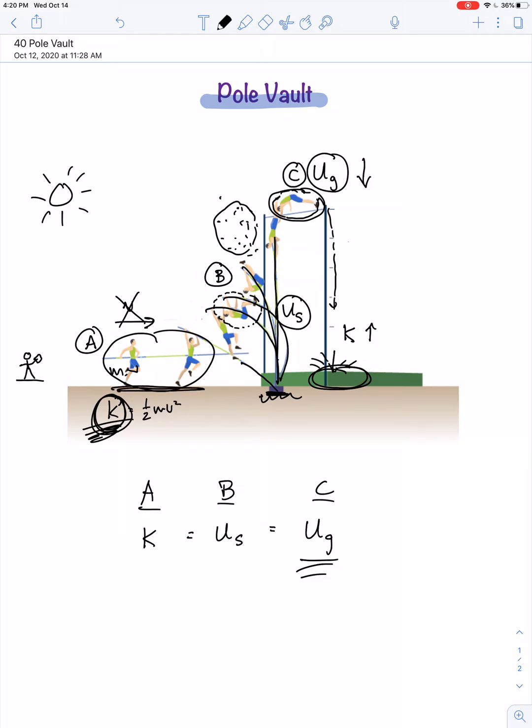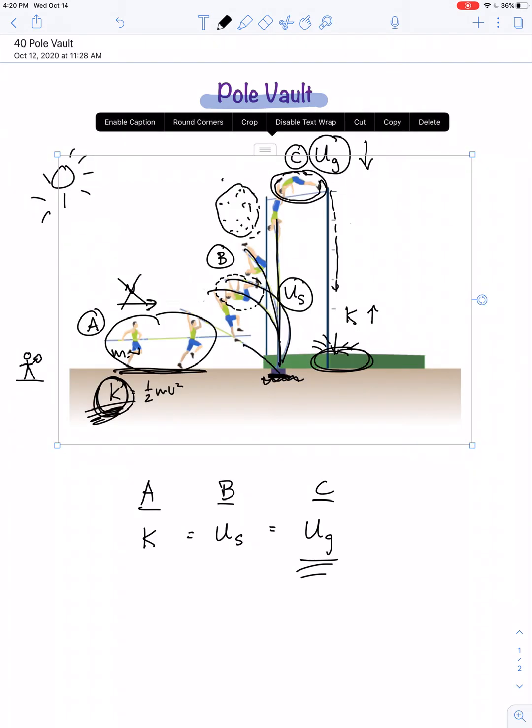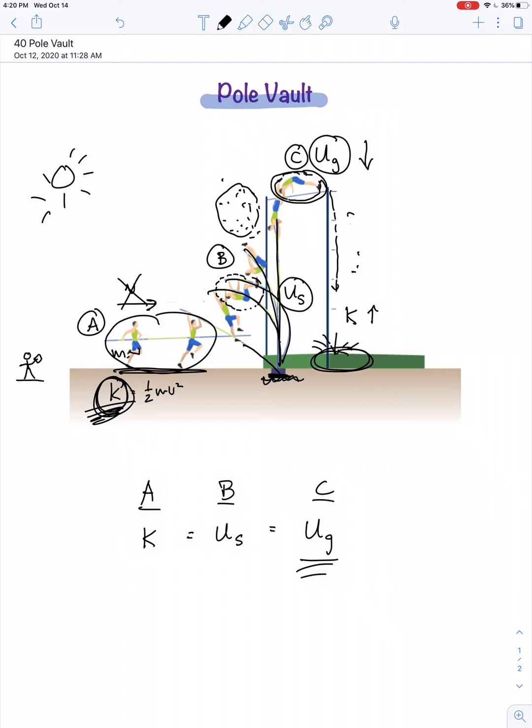But, of course, there is some friction. There's air resistance while they rise. There's air resistance while they fall. And the pole is also probably non-ideal, meaning when it flexes, it probably generates a little bit of thermal energy.